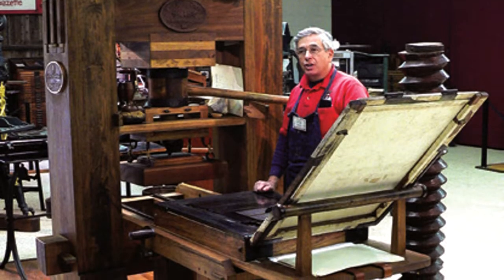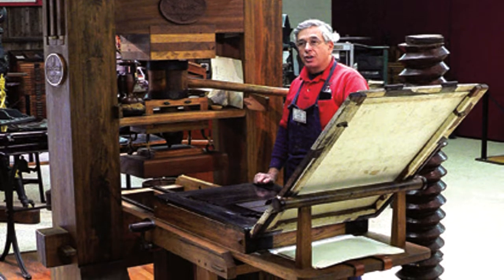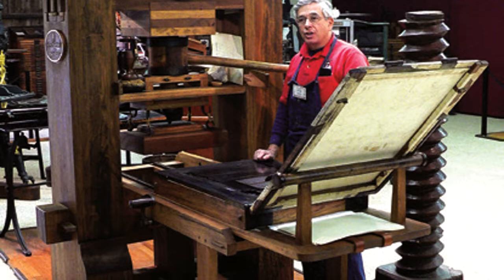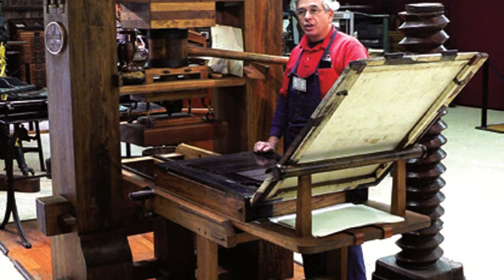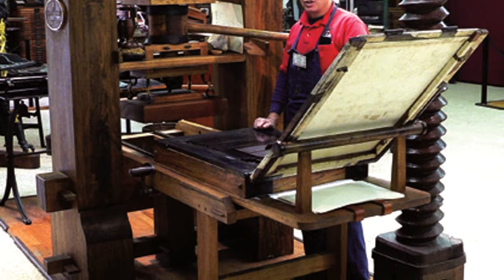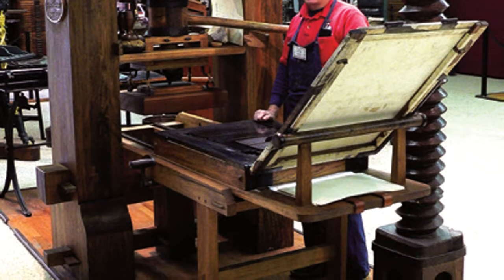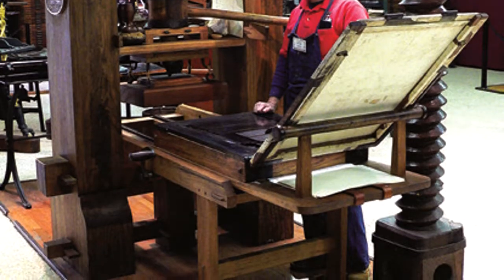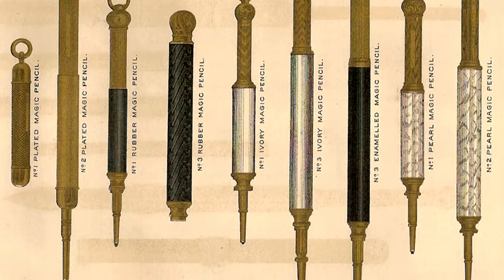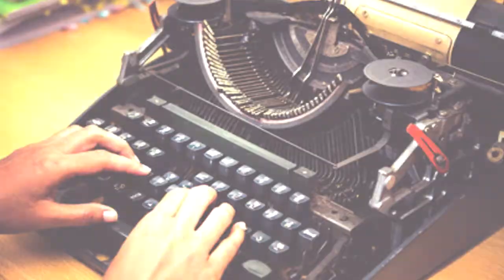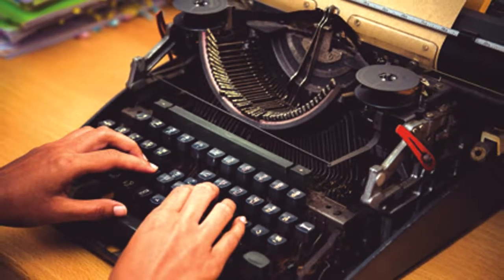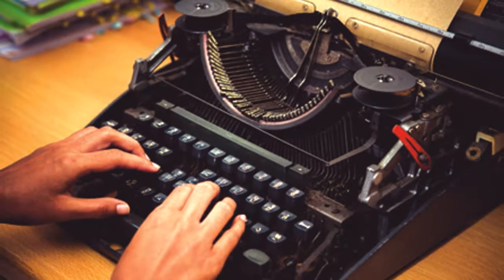In about 1450, the first printing press was made by Johannes Gutenberg in Europe. It could print books quickly, giving everyone access to books and newspapers. The inventions of pencils in the 16th century and the typewriter in the 19th century both made writing faster and easier.